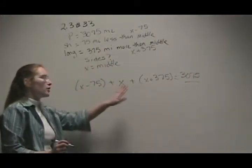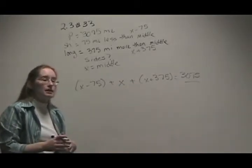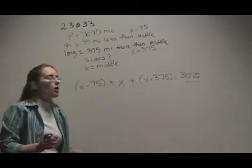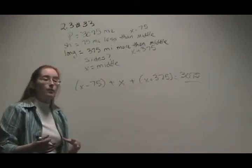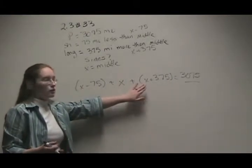Now notice I put these all in parentheses. The reason I did that is because if we did have something else coming into this that we needed to multiply by, or if we had negative signs, any of that, I want to make sure I apply it to the entire of each set.